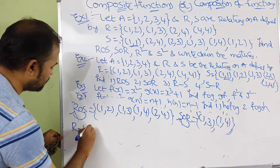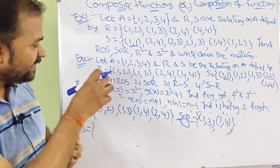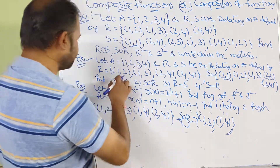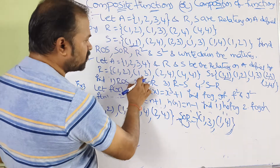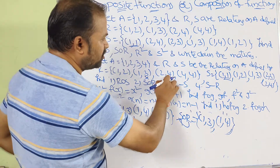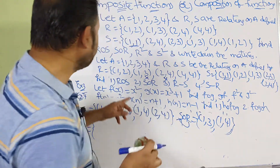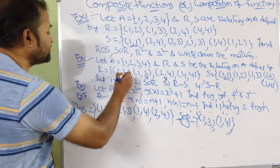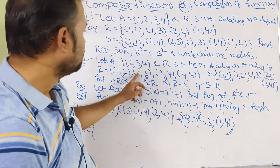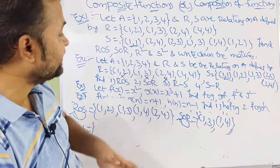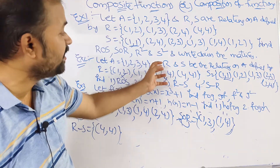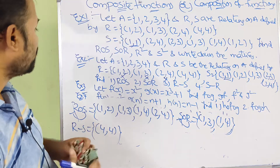Next compute R−S. R−S contains pairs present in R but not in S. R has (1,2) — also in S, cancel. (1,3) — also in S, cancel. (2,4) — also in S, cancel. (4,4) — this pair is present only in R, not in S. So the result of R−S is {(4,4)}.